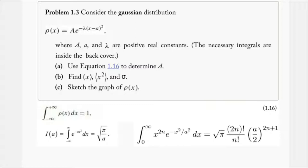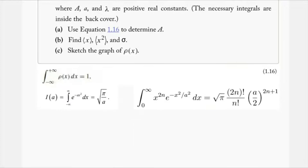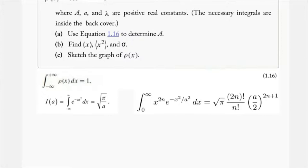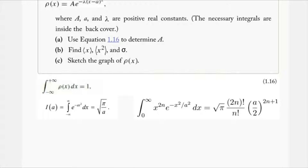Today we're going to be taking a look at problem 1.3 from Griffith's Intro to Quantum Mechanics. It asks us to consider the Gaussian distribution ρ(x), given several real constants. I've included two integrals that are essential to solving so many integrals in quantum mechanics. I would recommend using both of these rather than anything else in the back cover — those are really the most important, especially for this problem.